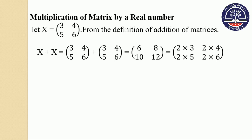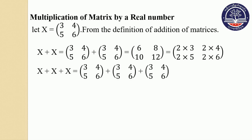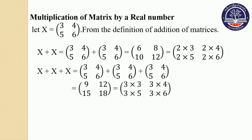If you want to do it, the result is about 9, 12, 15, and 18. So the scalar multiplication gives 9, 12, 15, and 18.